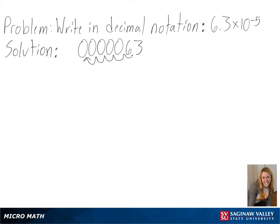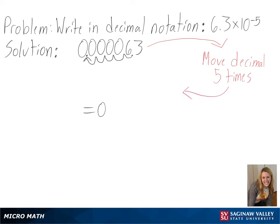And since the exponent is 5, we can add five zeros so we are able to move our decimal five times. So we get 0.000063 as our final answer.